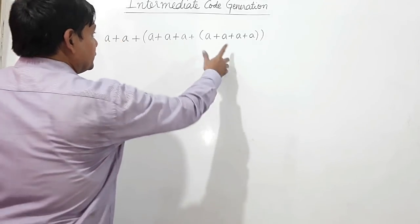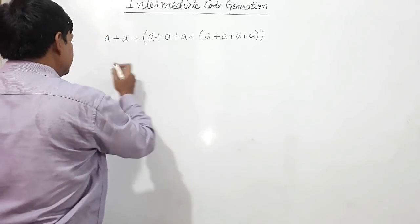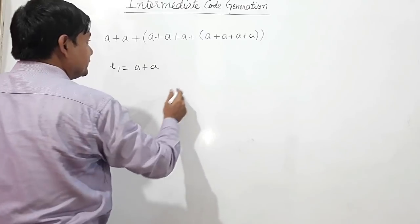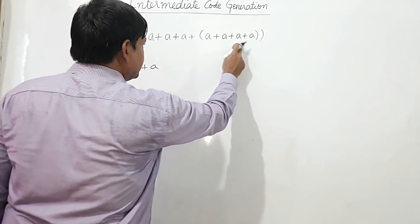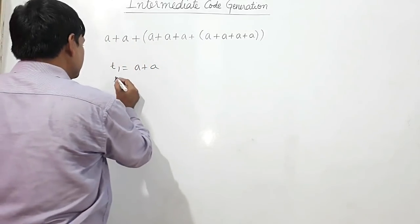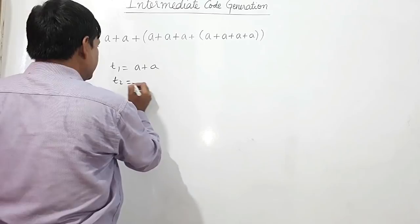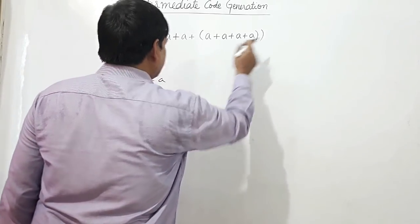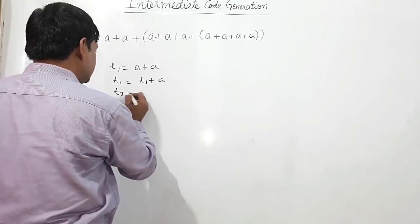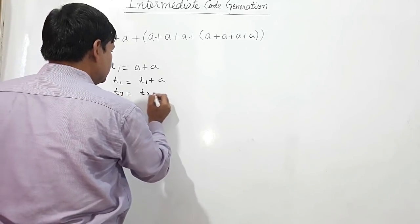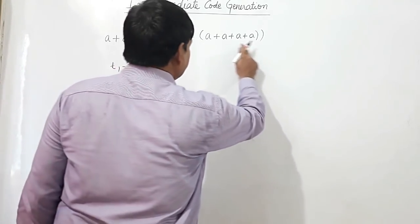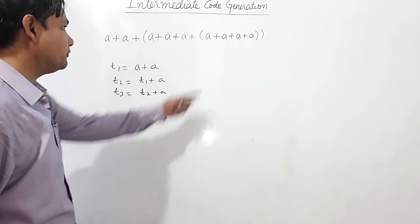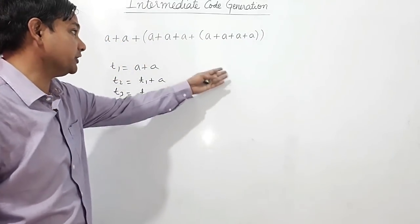We have to evaluate which I take as t1. t1 is equal to a plus a. Now, this has to be added with a. So t2 will be equal to t1 plus a. Now, we have to add: t3 is equal to t2 plus a. So we have got this result — sum of four a's.